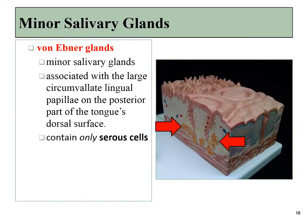There are some salivary glands associated with the circumvallate papillae of the tongue. These are pretty small, but they were big enough to get this person's name — the von Ebner glands.